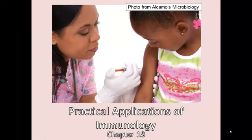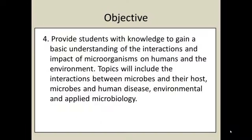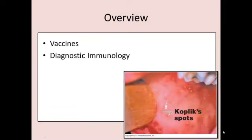Welcome to Chapter 18, Practical Applications of Immunology. This chapter fulfills objective number 4, and once again particularly covers interactions between microbes and their host, microbes and human disease. In this chapter we have two basic topics: vaccines and diagnostic immunology.